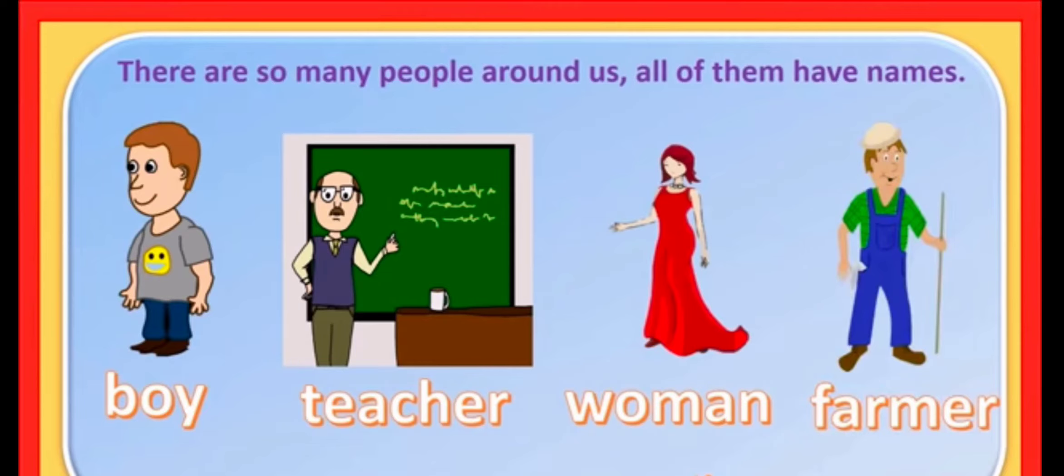There are so many people around us and all of them have names. Now, let us see who all are there in the picture. Boy, teacher, woman, farmer. So, all these are the names of persons or people around us.